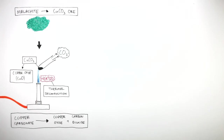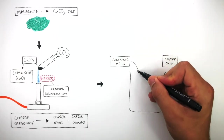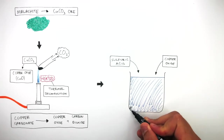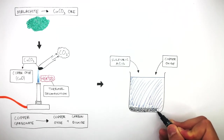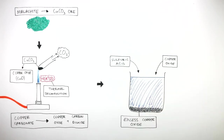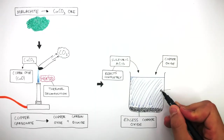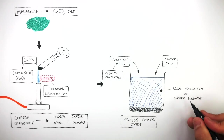Once we've obtained our copper oxide, we then use a beaker and sulfuric acid. We add the sulfuric acid and copper oxide to the beaker. The sulfuric acid and copper oxide react to form copper sulfate solution. Excess copper oxide settles at the bottom of the beaker, ensuring all the sulfuric acid has reacted, forming a blue solution of copper sulfate, CuSO4 (aq).